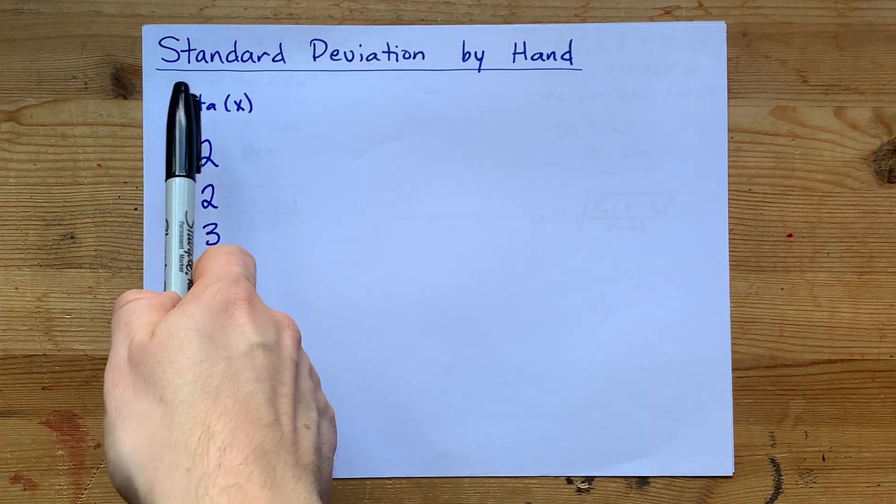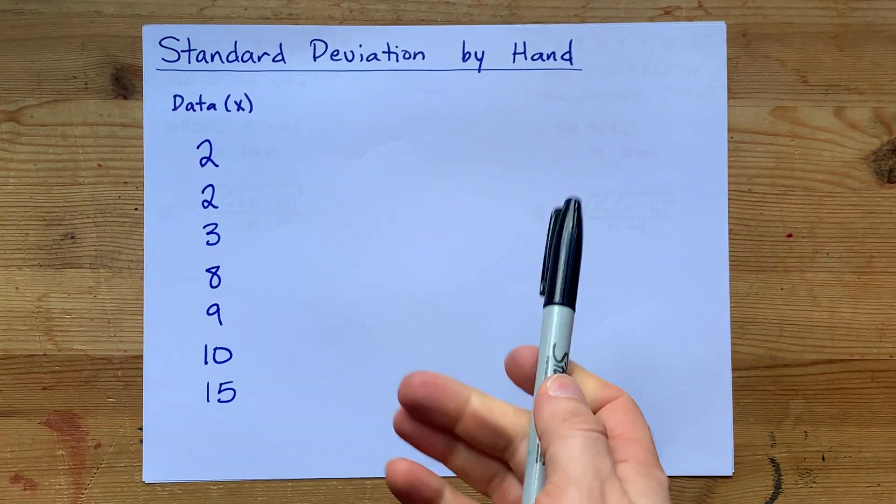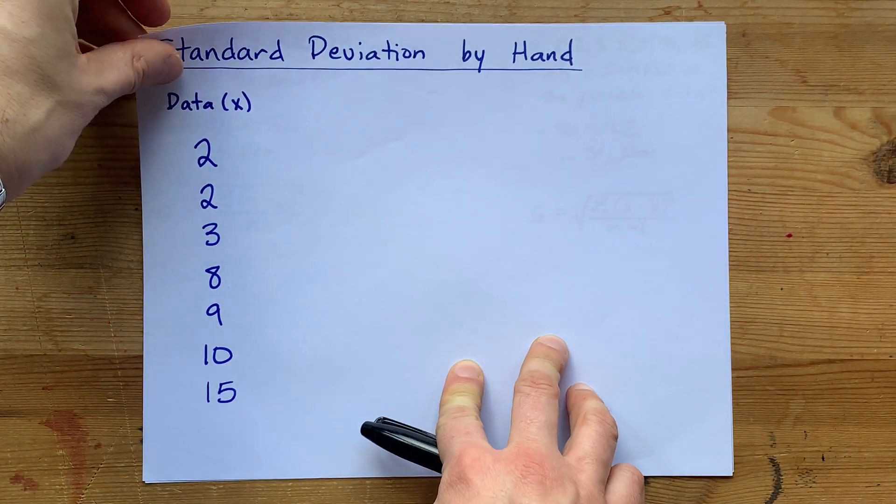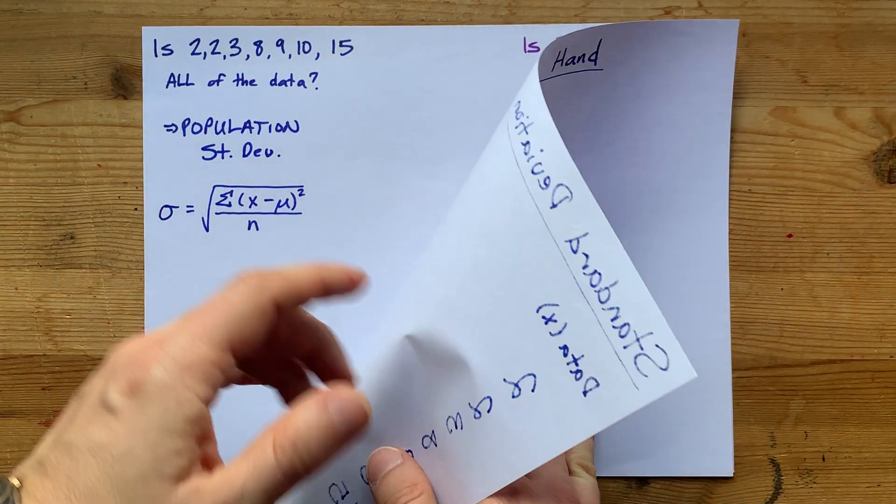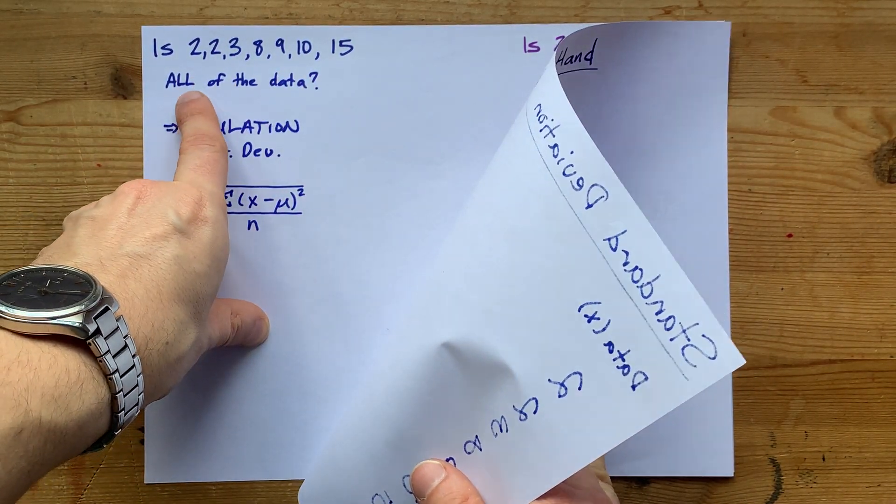What is the process to find standard deviation of a set of numbers by hand, without a computer? Well, the process is only going to be slightly different if you have a population, meaning that those numbers are all of the data, or if it's a sample.